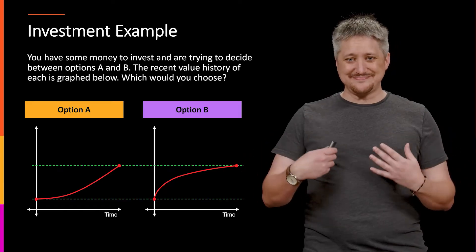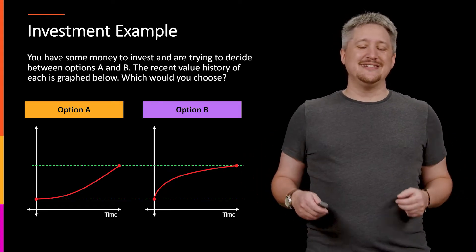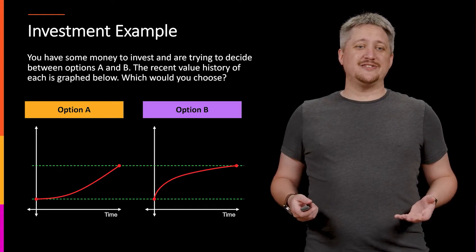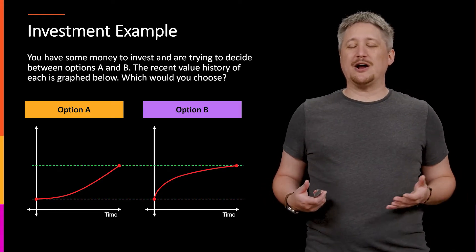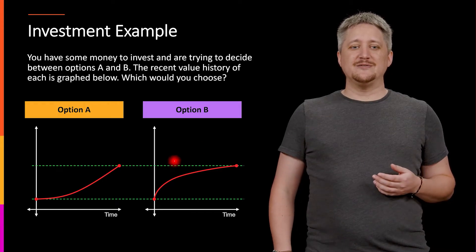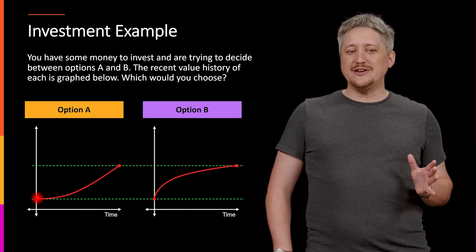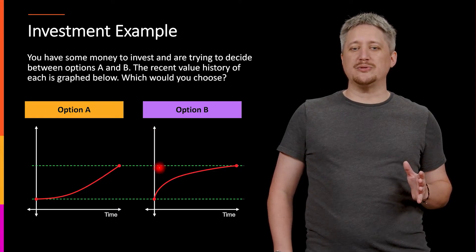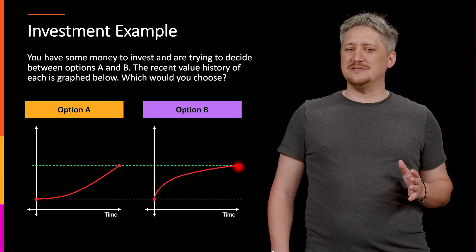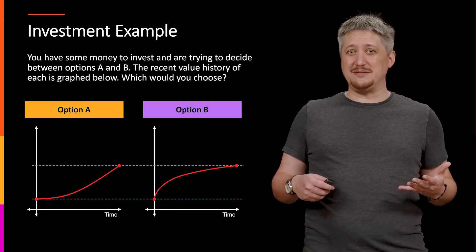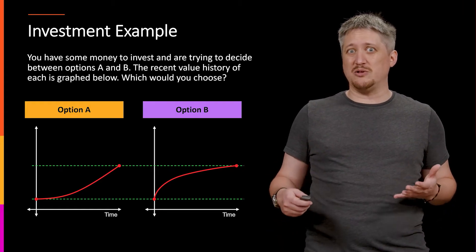Looking at this, most people, I suspect, would say option A probably looks like a better bet. Even though they start at the same value and end at the same value, option A seems like it's sort of taking off for real growth, whereas option B seems like it's leveling out — like its growth has peaked, and maybe it's not going to grow all that much more.